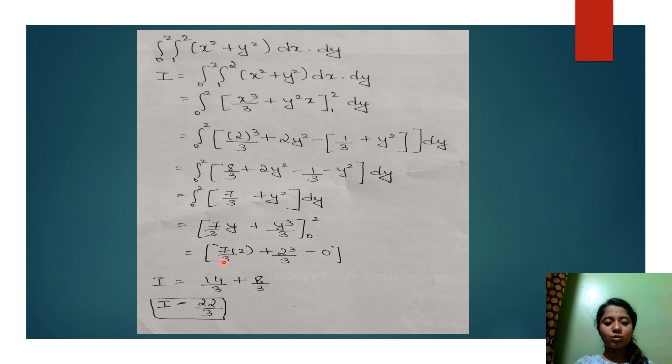Then the integration goes like this: 7 into 2 is 14 by 3 plus 2 cube is 8, it will be 8 by 3. So 14 by 3 plus 8 by 3 gives 22 by 3. So this is the final answer.